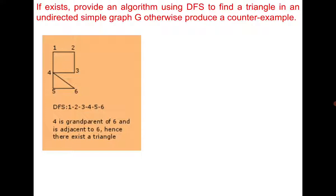If I apply DFS there are multiple choices: from 1 you can go to 4, or from 1 you can go to 2. One of the DFS trees is 1, 2, 3, 4, 5, 6. In this tree, 4 is the grandparent of 6, and 5 is the parent of 6. Now 4 and 6 are adjacent in the original graph, which identifies a triangle in the original graph.